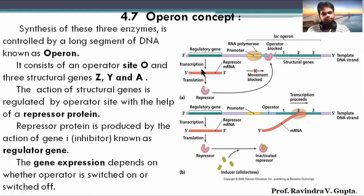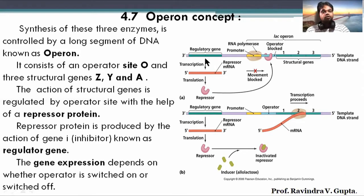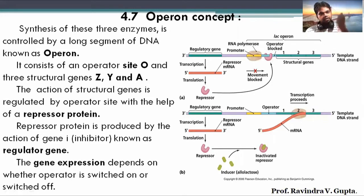Transcription of the regulatory gene produces repressor mRNA, and translation produces repressor protein. If the repressor protein binds on the operator region, then DNA polymerase enzyme cannot go forward, and the three structural genes will not be read. Ultimately, transcription and translation of the structural genes will not be done. Whether the structural genes form enzymes or not depends on the repressor protein, which in turn depends on the regulatory gene. This operator region is like a brake — the operon will be switched off.